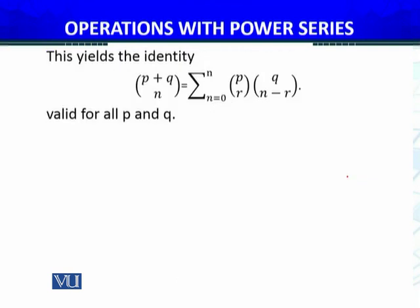This yields the identity that (p+q) choose n equals summation r equals 0 to n of (p choose r) times (q choose (n-r)). So this is the formula which we have concluded by using the concept of product of two power series.